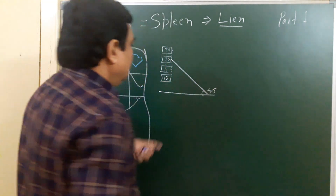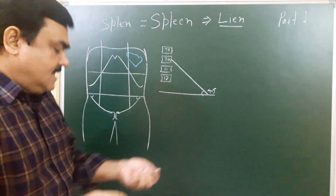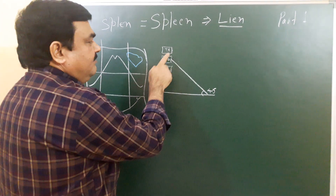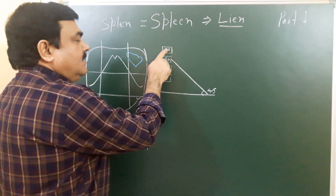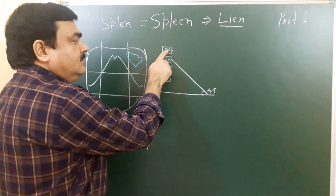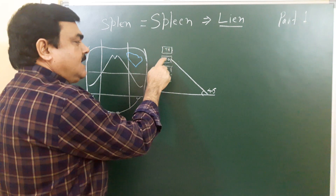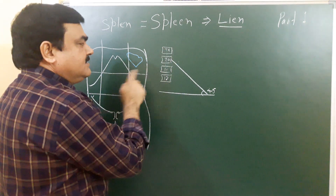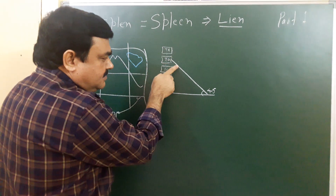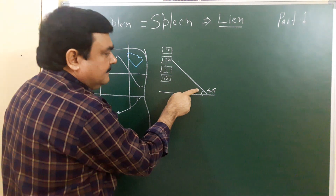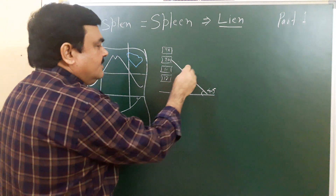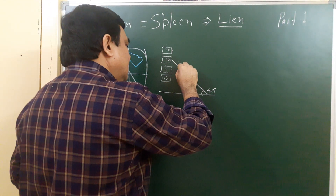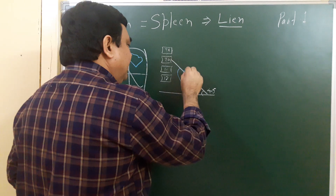The long axis of the spleen lies along the 10th rib. The vertebral references are the 9th, 10th, 11th, and 12th thoracic vertebrae, and the spleen lies along the 10th rib.